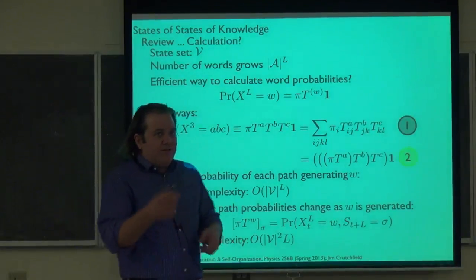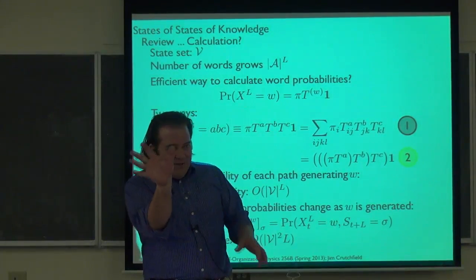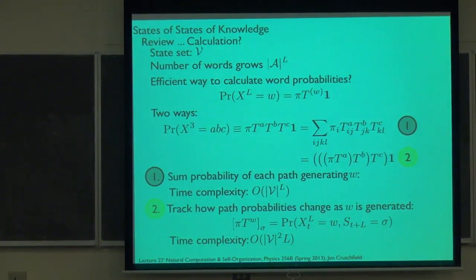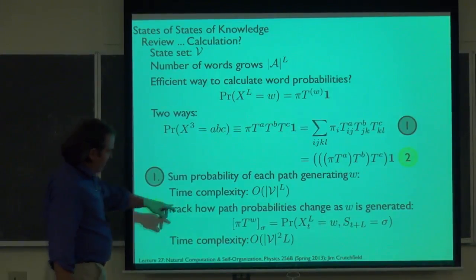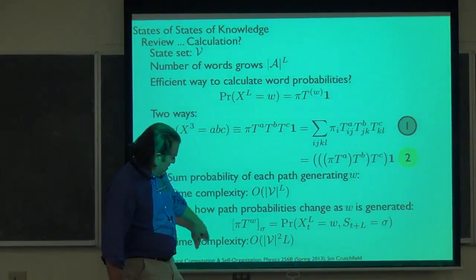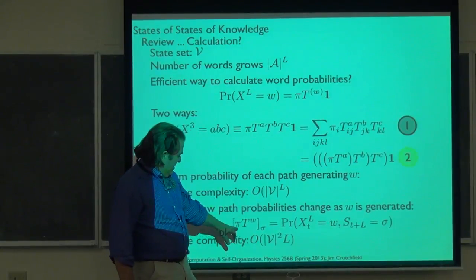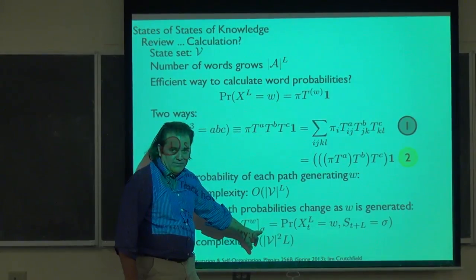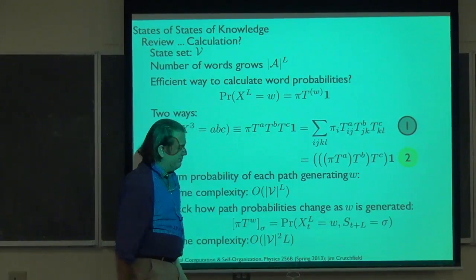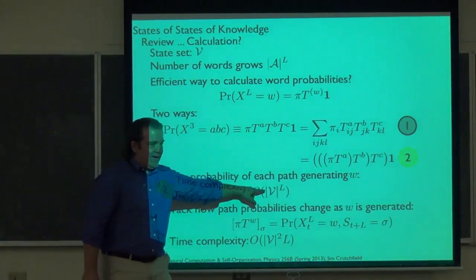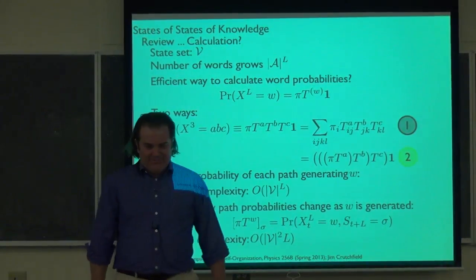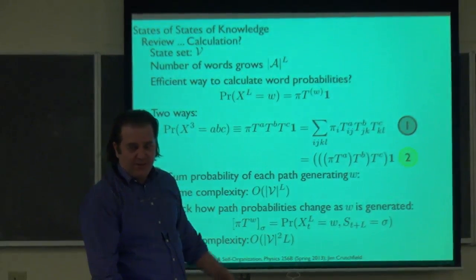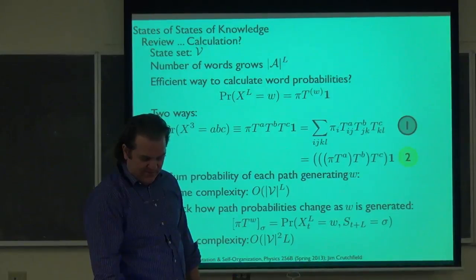We're using the states to carry what we need from the past. We do this nested updating of the internal state distribution — just like the synchronization problem. We update our distribution of the internal states of the hidden weather system. The sigma component of that vector is the probability that you produce W and ended up in state sigma. So rather than having your calculations poop out at short word lengths, you can push this quite a lot further.